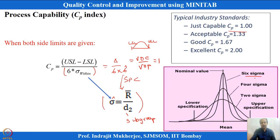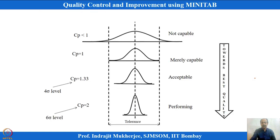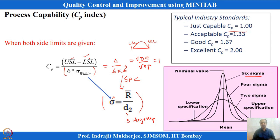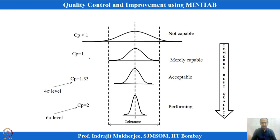CP can be calculated only when both USL and LSL are given. For one-sided specifications, CP cannot be calculated. MINITAB does not reveal any CP calculation when only LSL or USL is given. We will see this with examples.